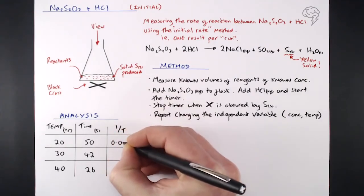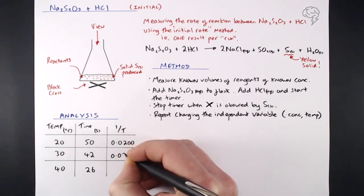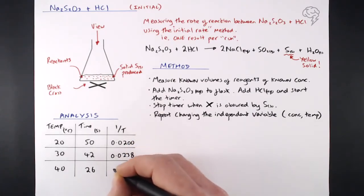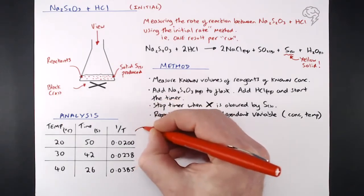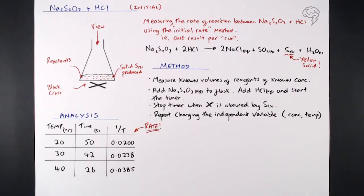So we literally put into our calculator one divided by 50, one divided by 42, one divided by 26. And we get these numbers 0.0200, 0.0238 and 0.0385. So you can now see that the higher the temperature, the greater the rate we've inverted that time. So that's what one over t is all about. So one over t is our rate. That's what we do with these initial rate methods like this one, where we've only got a time. That's what we do with one over t. And that's our rate.